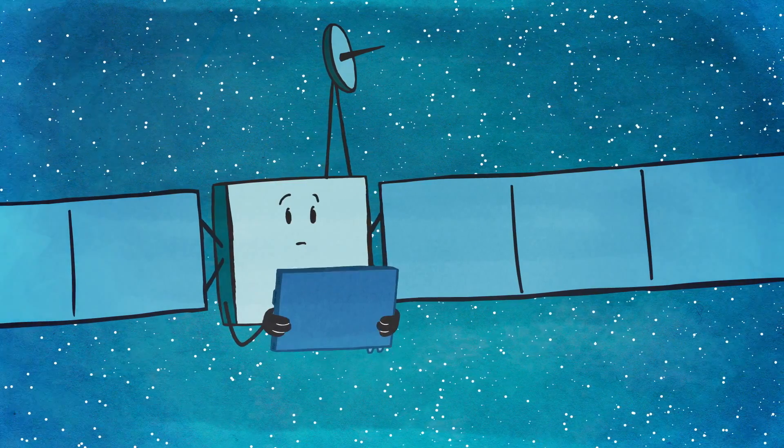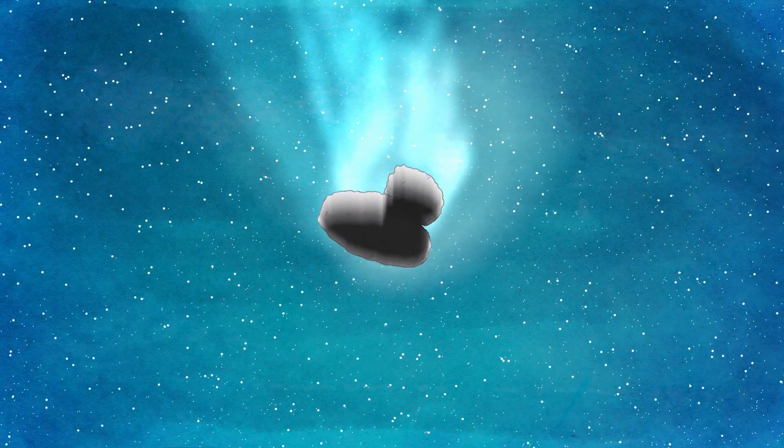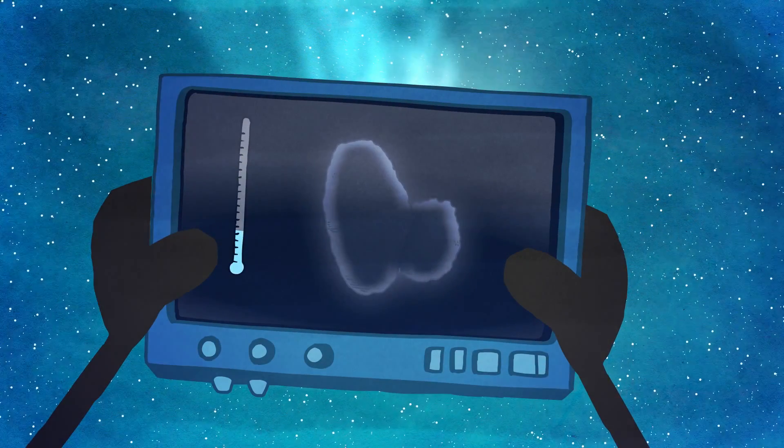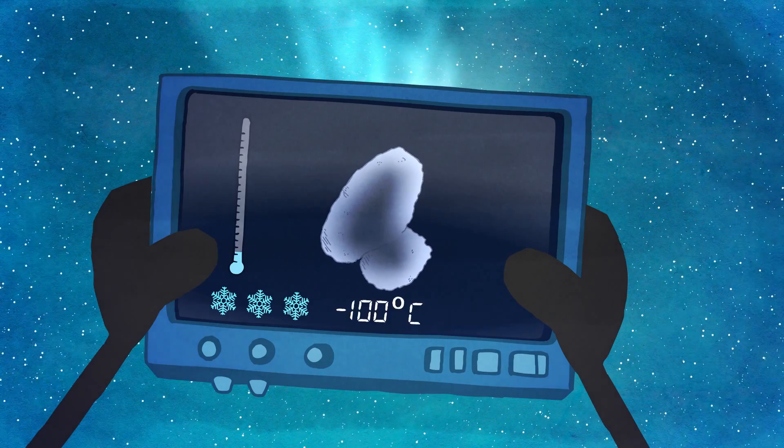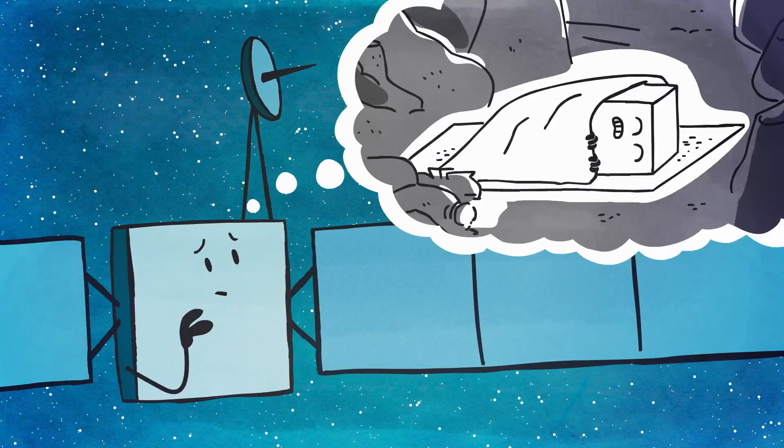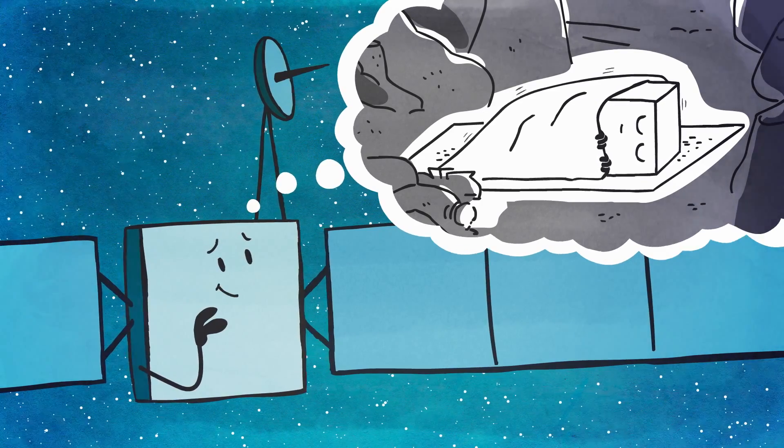Even though the comet was becoming more active, it was still quite cold on the surface. Rosetta measured temperatures around minus 100 degrees Celsius, and it was even colder underneath. Thinking about the cold, she worried about Philae, who had been asleep for several months.